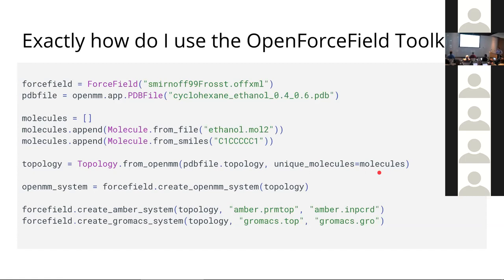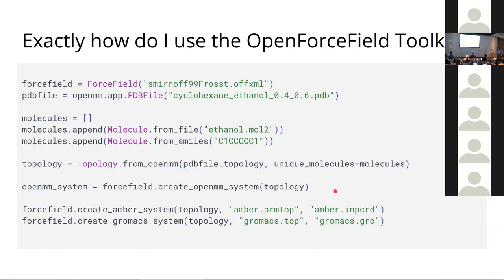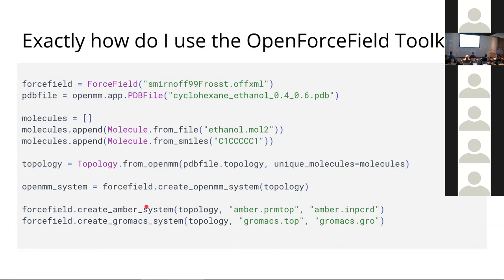Once we have unique molecules defined, we make a topology object — a toolkit-independent topology object that comes with the OpenForceField toolkit; you don't need OpenEye. This contains a description of the molecular system as well as detailed information about each unique molecule. Finally, you can output the resulting system in OpenMM format. Many people have said they don't want OpenMM format, and that's okay — there's a tool called ParmEd that we can use, at least as a first pass, to generate AMBER and GROMACS systems.